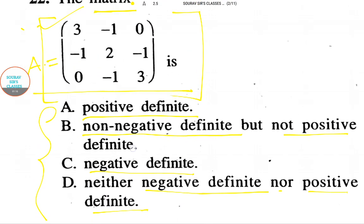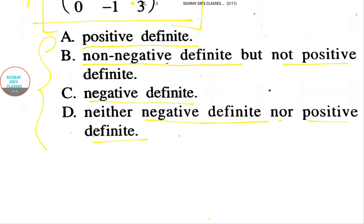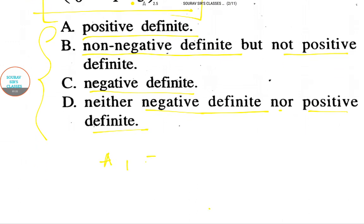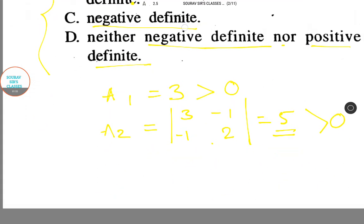If we solve for all the principal minors, A1 equals 3, and 3 is greater than 0. Now A2 will be the matrix [3, -1; -1, 2]. If we solve it, we get 5, and 5 is greater than 0.